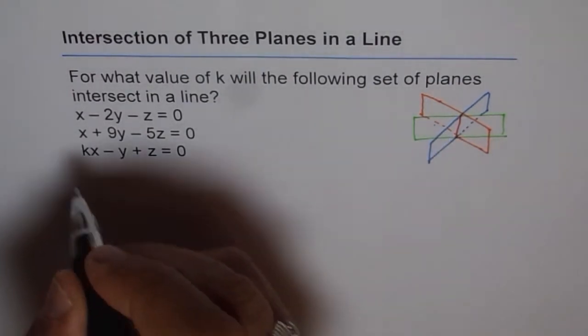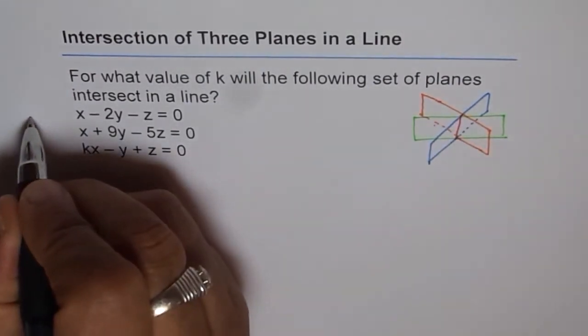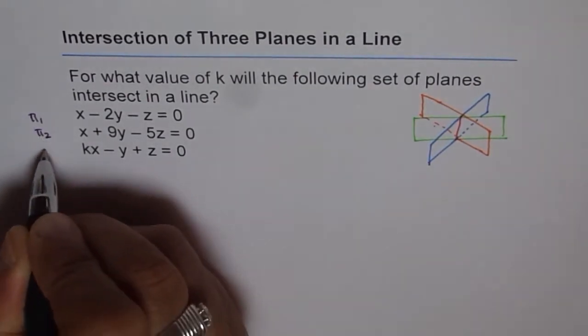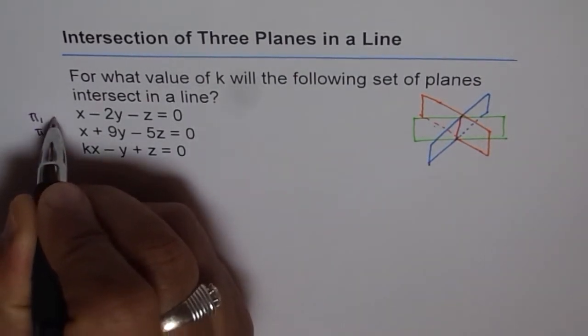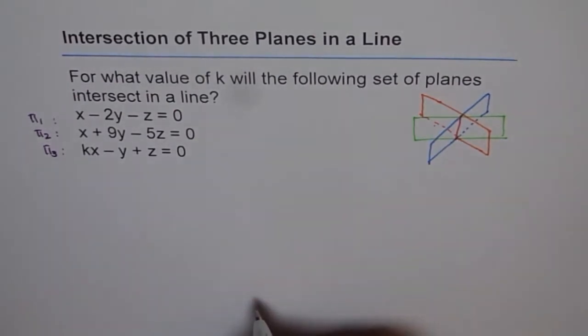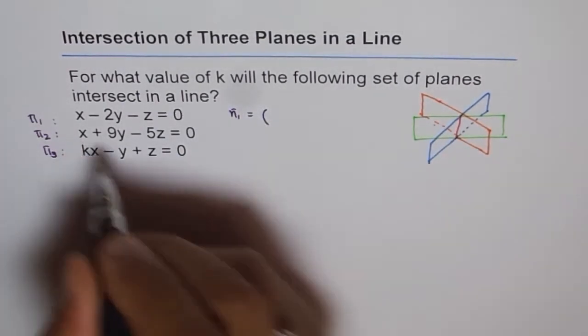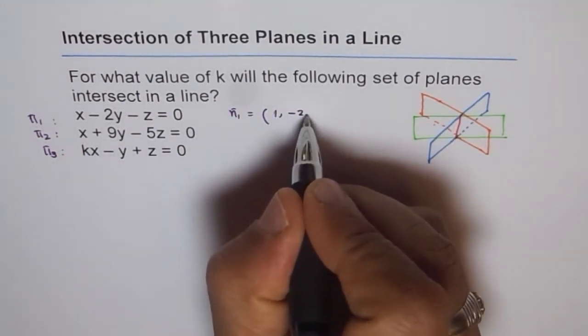So let's say the normal, this is our plane 1 and this is our plane 2 and this is plane 3. With normals n1, n2 and n3. So what are the normals here? So the normal n1 is equal to (1, -2, -1),